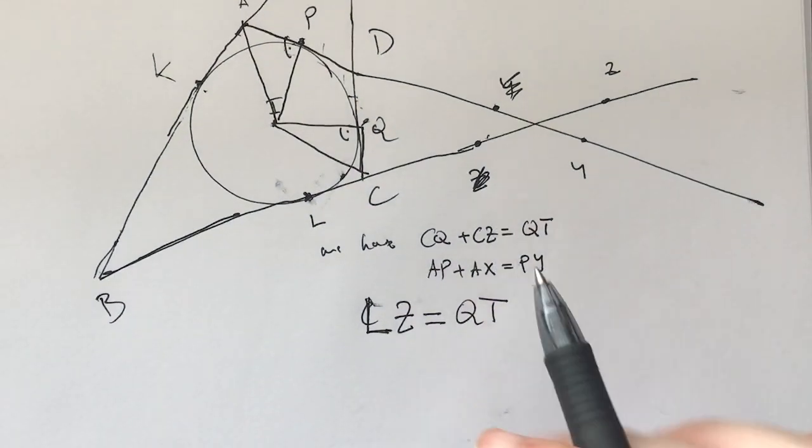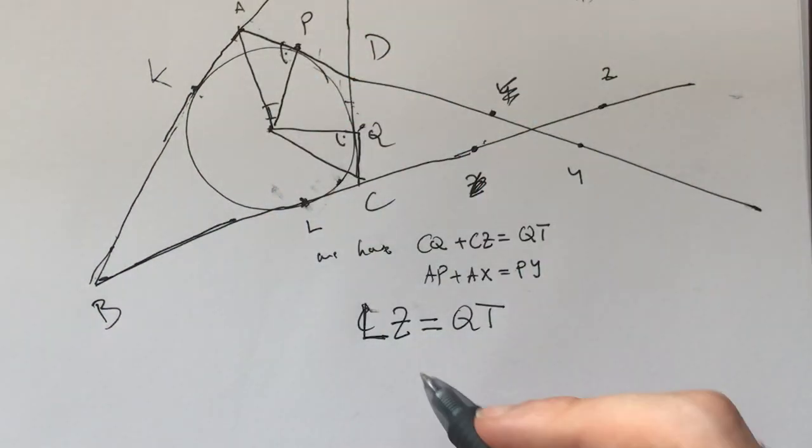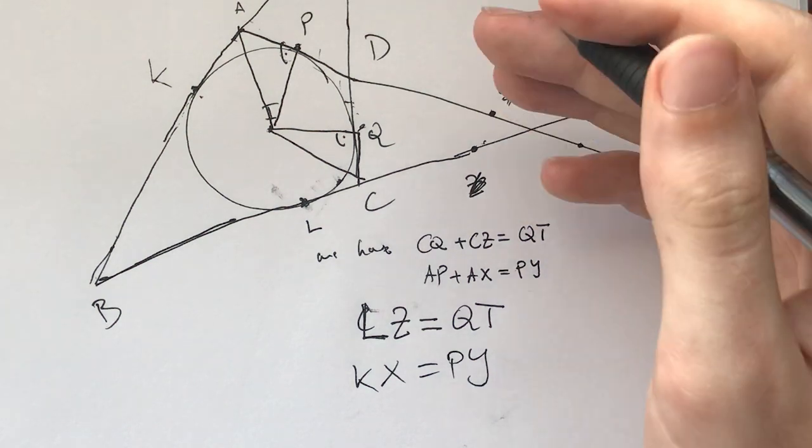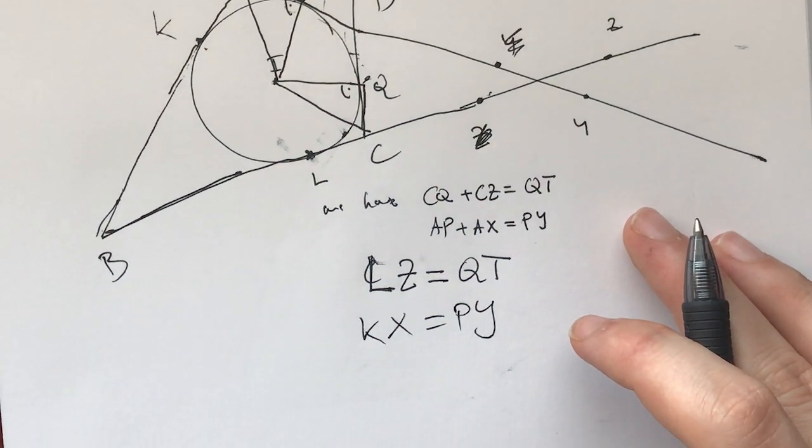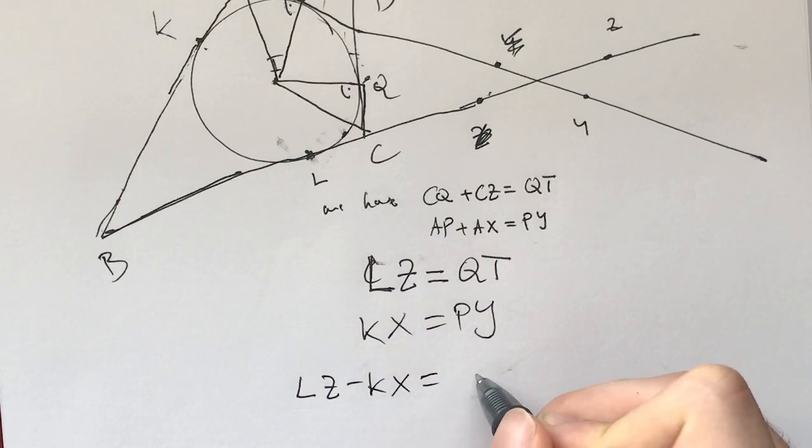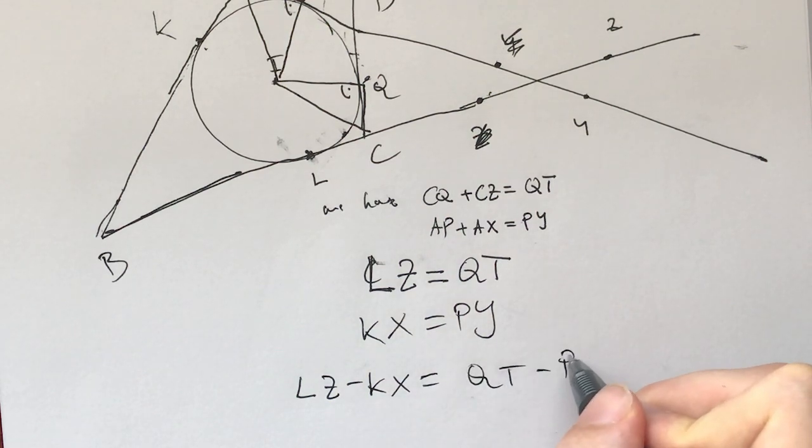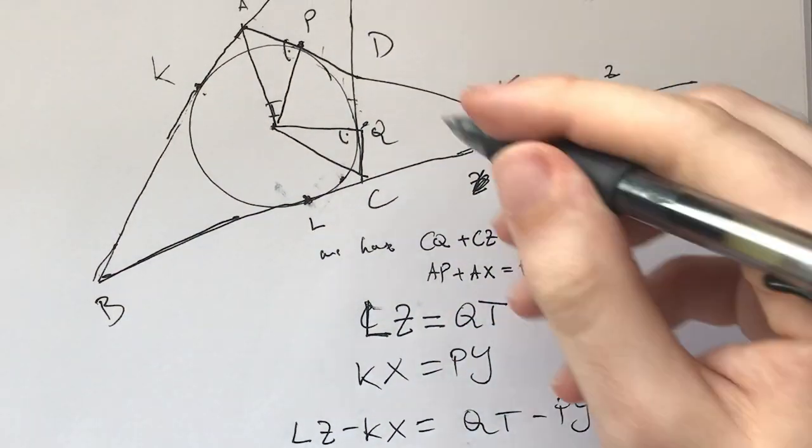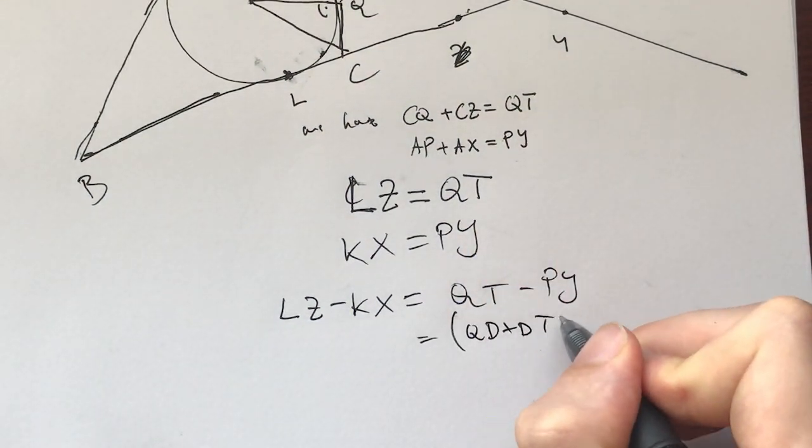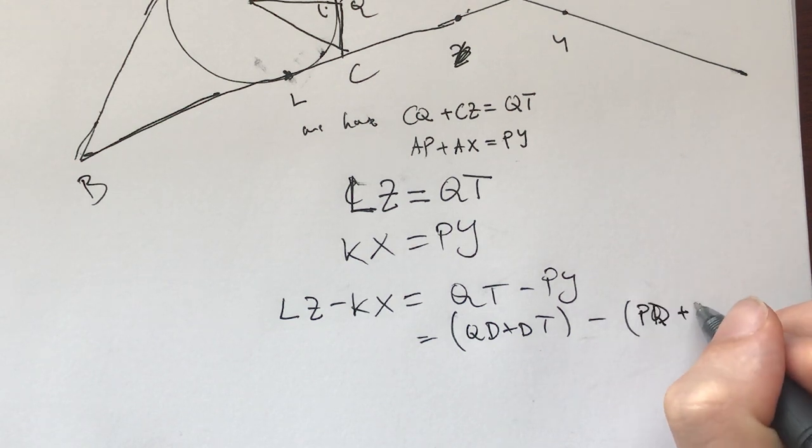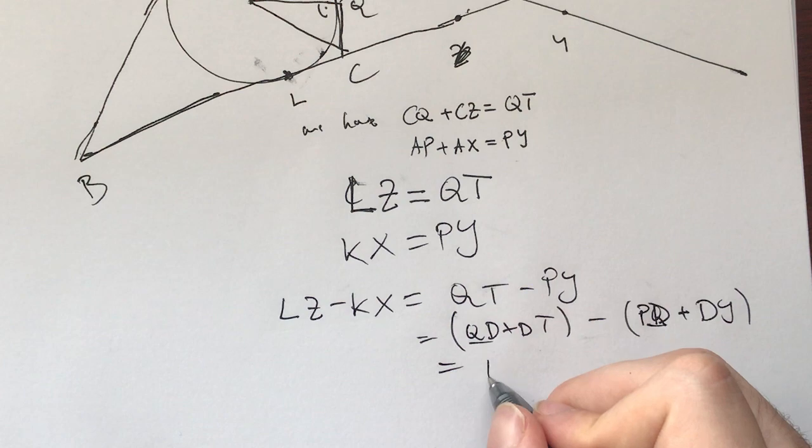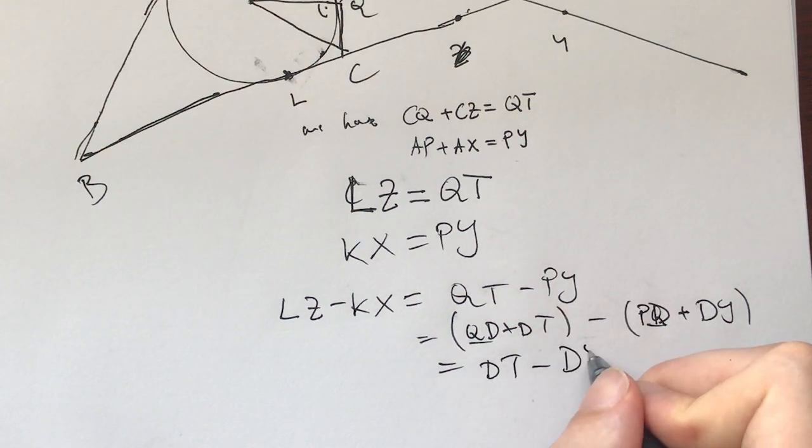Let's add these two points K and L. Now CQ plus CZ is actually going to be equal to CL plus CZ, which is going to be equal to LZ equals QT. And we'll have KX. Similarly, AP is AK. And we'll have KX equals PY. And now what happens when we subtract? We get LZ minus KX is equal to QT minus PY. Now, what is QT? QT is equal to QD plus DT minus PD minus DY. That is, QD and PD cancel out. This is DT minus DY.